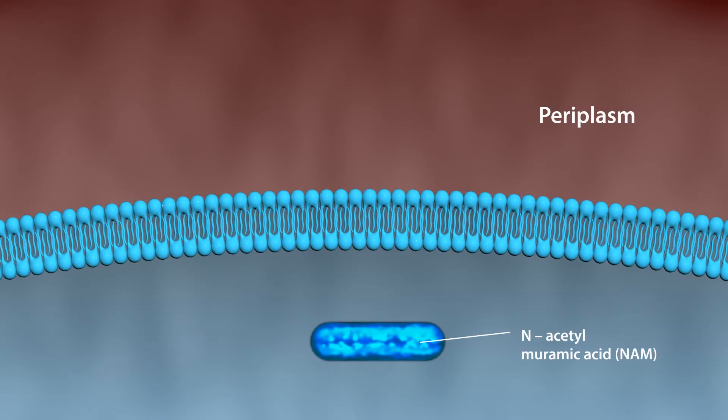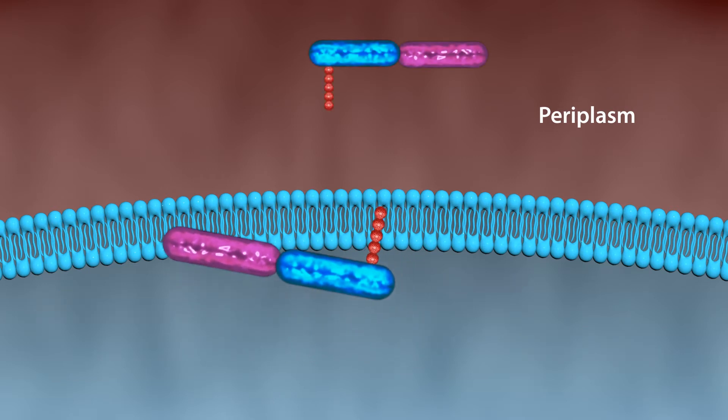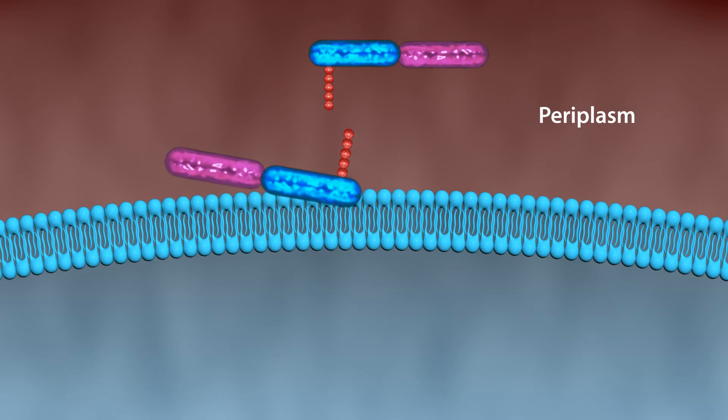Synthesis of peptidoglycan occurs by addition of amino acids to N-acetylmuramic acid. Then, N-acetylglucosamine adds to N-acetylmuramic acid and forms the precursor of peptidoglycan, which transports across the cell membrane to the cell wall acceptor in the periplasm.